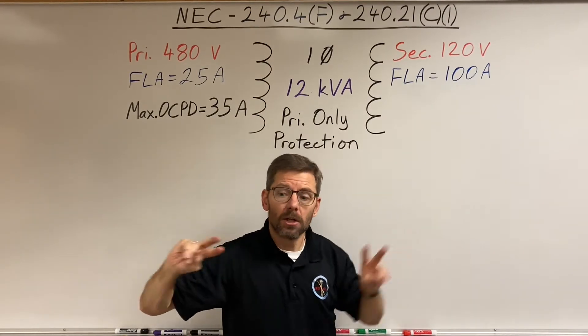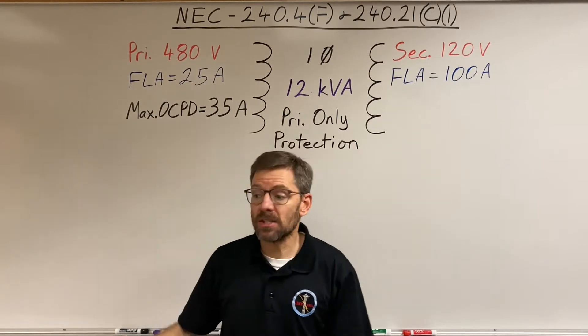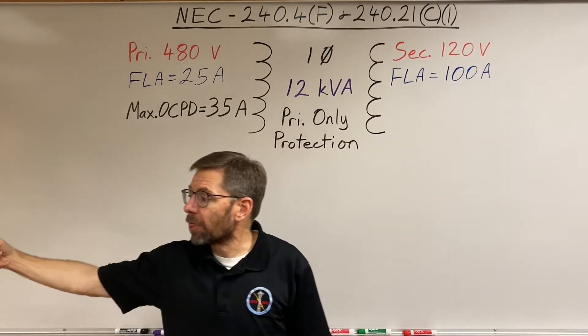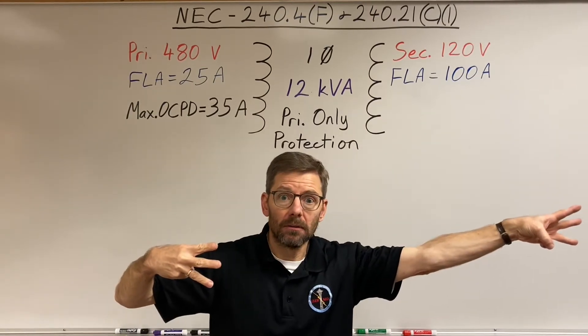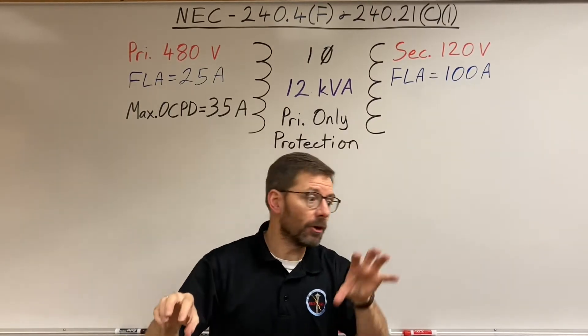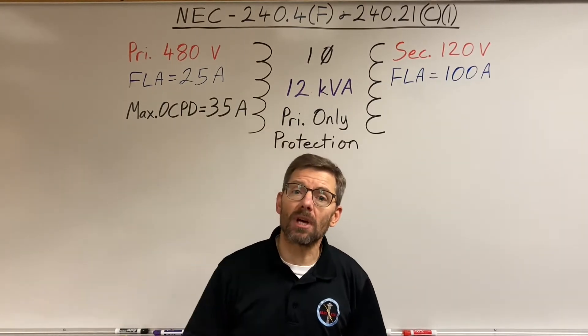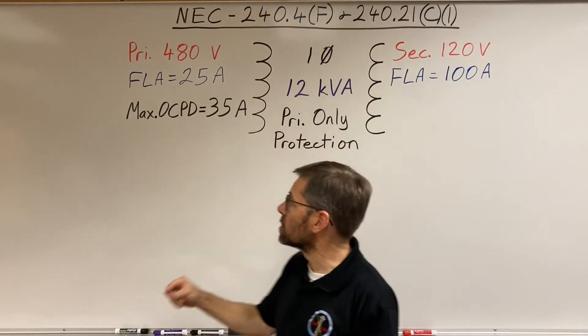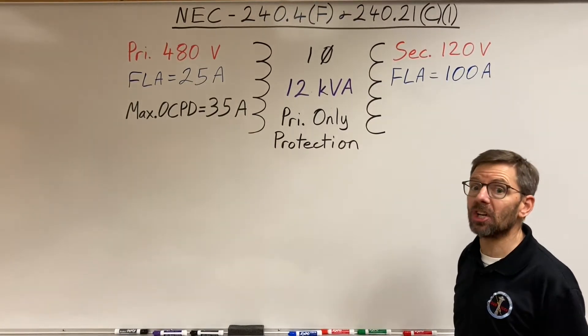No neutral, no third wire, just two in, two out. Or a three phase delta-delta with three wires coming in on the primary and three wires going out. That's the only two times I can use a primary overcurrent device to protect a secondary conductor.